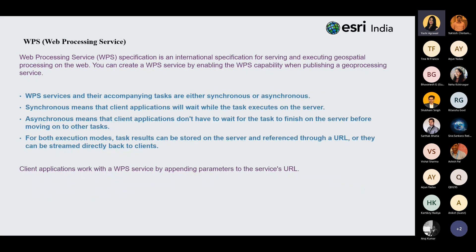The next one is WPS — web processing service — an international specification for serving and executing geospatial processing on the web. You can create a WPS service by enabling the WPS capability when publishing a geoprocessing service. WPS services and their tasks are either synchronous — the client waits while the task executes — or asynchronous — the client does not wait for the task to finish before moving on. For both modes, task results can be stored on the server and referenced through a URL, or streamed directly back to the client. A client application works with a WPS service by appending parameters to the service URL.